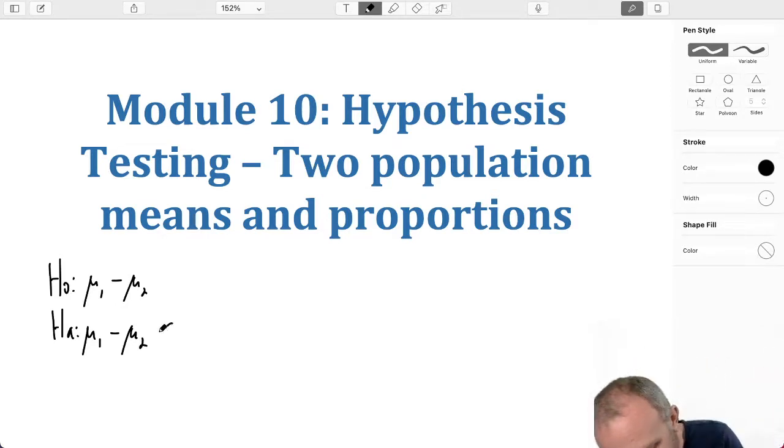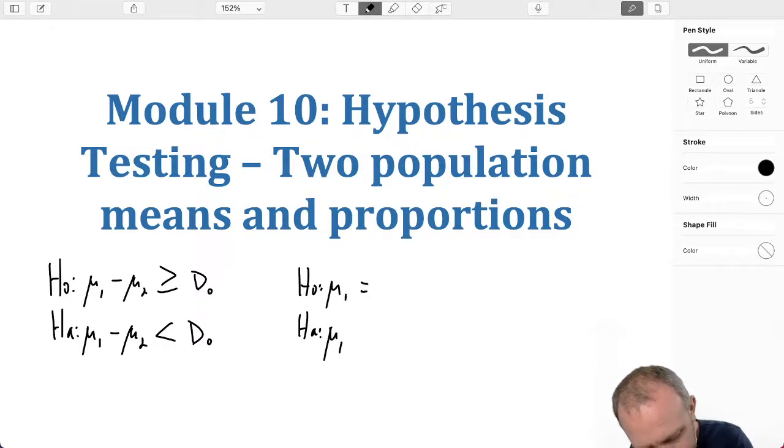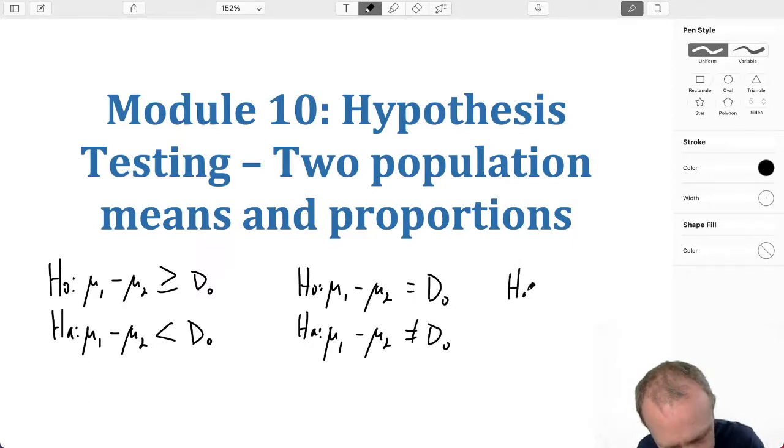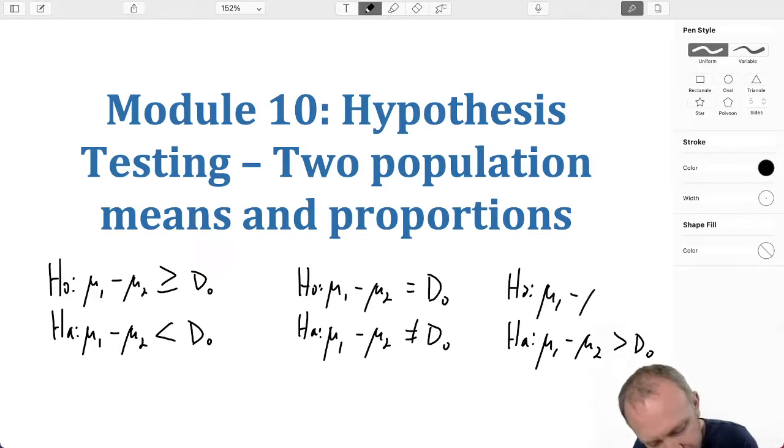So here we can have, let's do a Lower Tail Test, and here we have some hypothesized difference. Or we can do a Two Tail Test: Mu1 minus Mu2, is that difference equal to some value or not equal to some value? And of course, we have the Upper Tail option: Mu1 and Mu2, is that difference greater than some value? So you see some similarities here, some differences here.